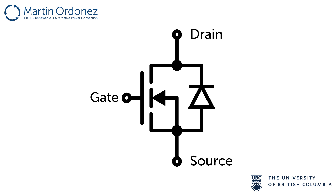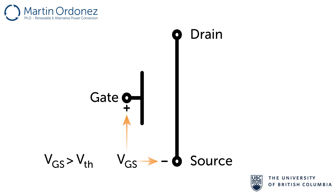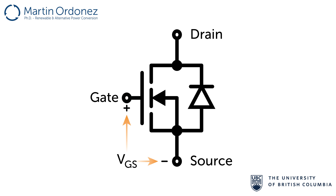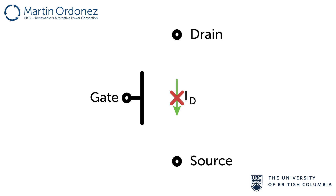Whenever a voltage VGS greater than a threshold voltage is applied between gate and source, the MOSFET turns on and current flows from drain to source. When this voltage is removed, the MOSFET turns off, blocking the voltage applied between drain and source and not allowing current to flow.